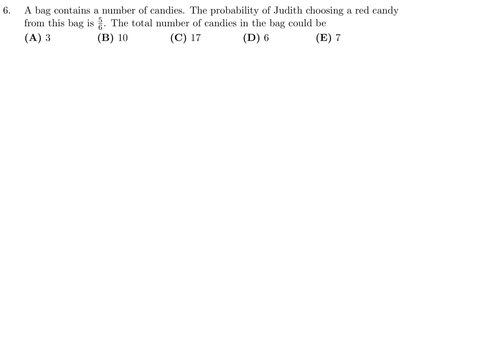A bag contains a number of candies. The probability of Judith choosing a red candy from this bag is 5 over 6. The total number of candies in the bag could be... Well, it's a probability question. They're saying it's 5 over 6. In all probability questions, the bottom number is the total, and the top number is the specific condition. In our question, the specific condition is that the candy be red. So the total is the total number of candies. That's what they're asking. The total number of candies in the bag could be... Well, it could be 6. Perfectly reasonable. So number 6, the answer is 6, which is choice D.